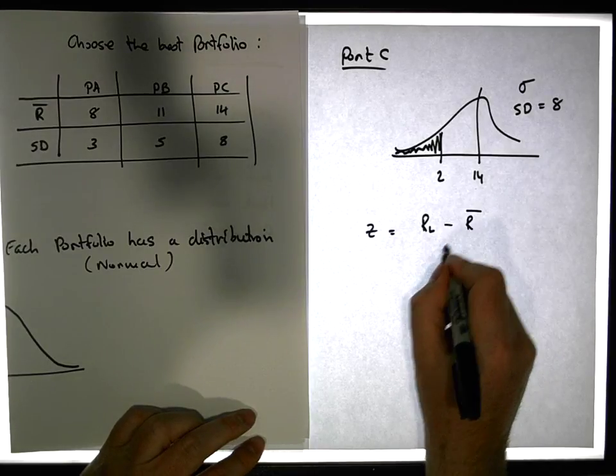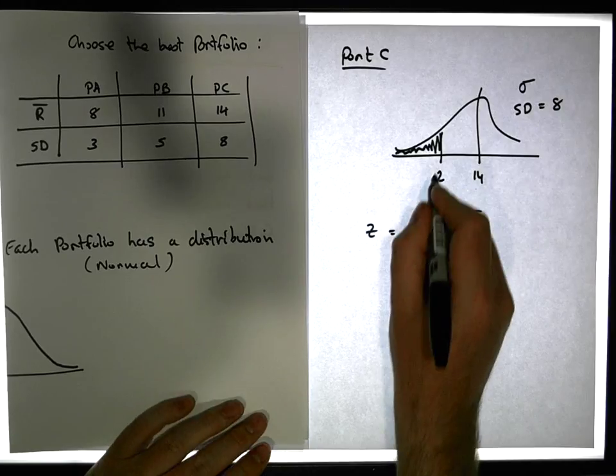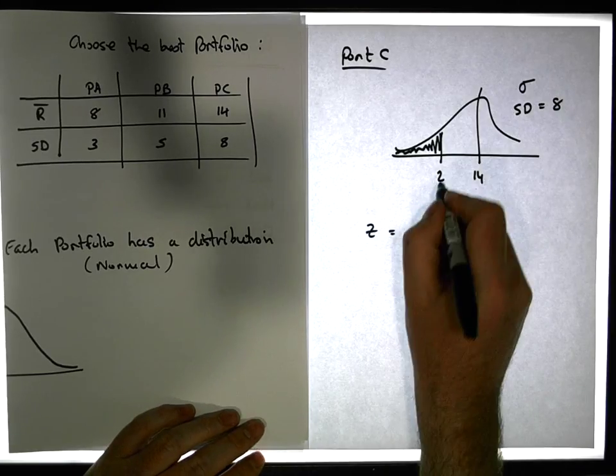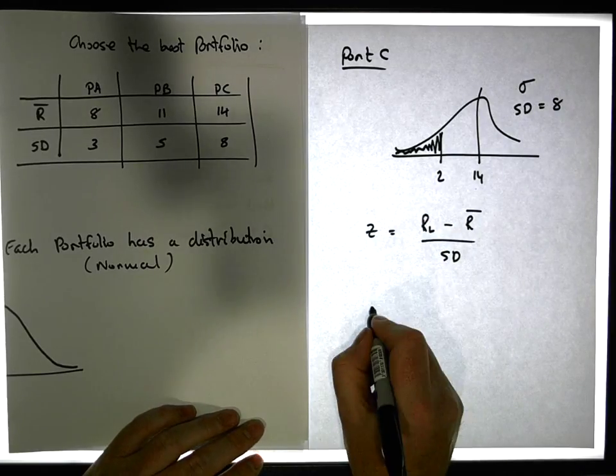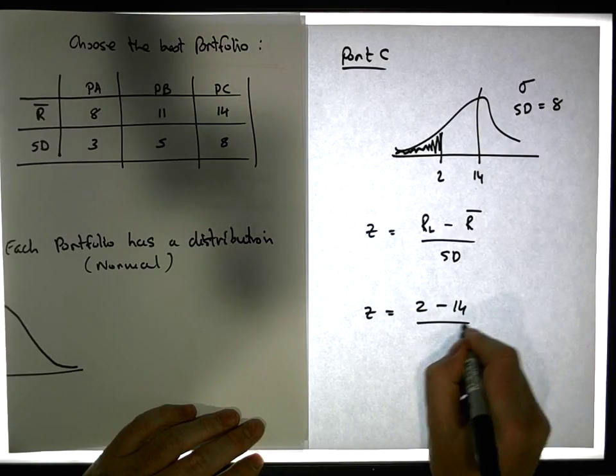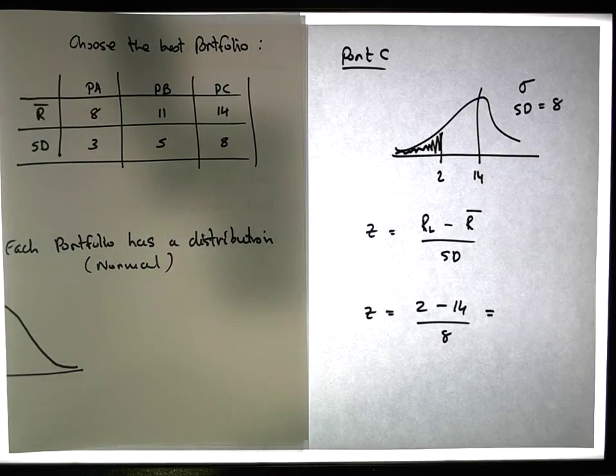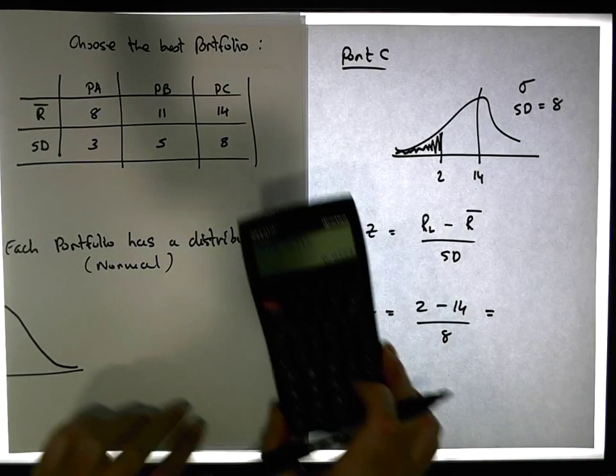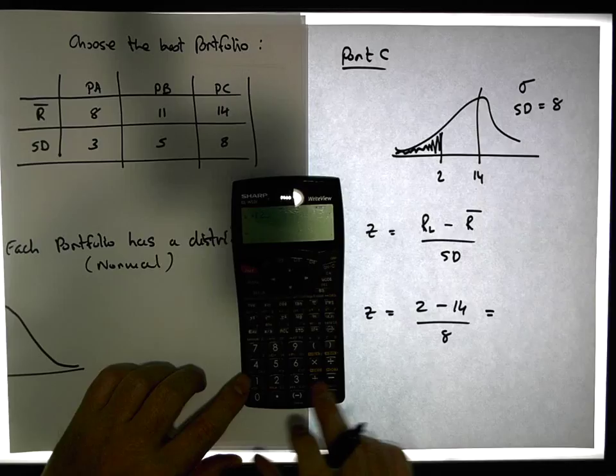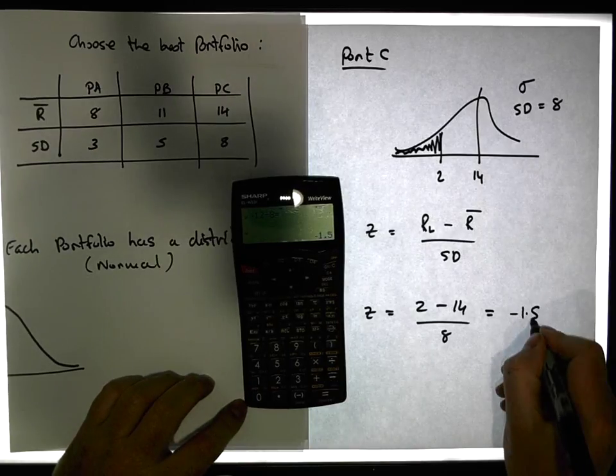So what is 2 as a z-score? It's equal to 2 minus 14 all over 8. That gives us minus 12, so minus 12 divided by 8 gives us a value of minus 1.5.